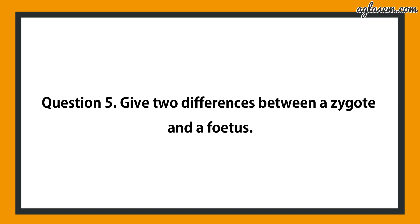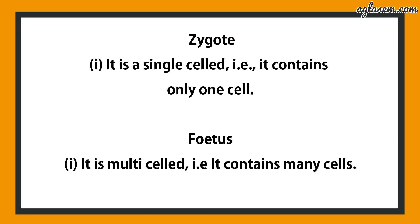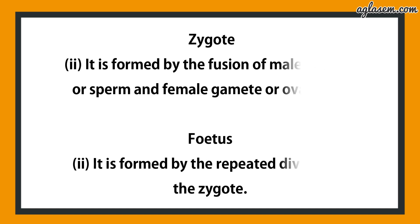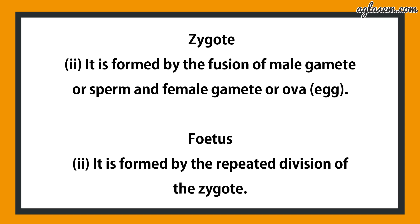Question number 5 says: give two differences between a zygote and a fetus. Regarding zygote: it is single-celled, containing only one cell. Whereas a fetus is multi-celled, containing many cells. Second point: zygote is formed by the fusion of male gamete or sperm and female gamete or ova, whereas a fetus is formed by repeated division of the zygote.